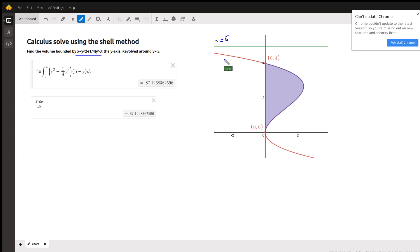Okay, so if we're going to use the shell method, we want our typical shells to be parallel to the axis of revolution. So this is what we visualize as a typical shell.